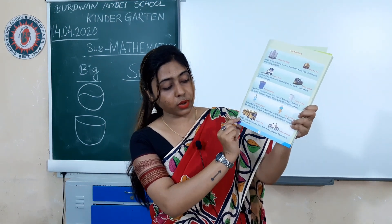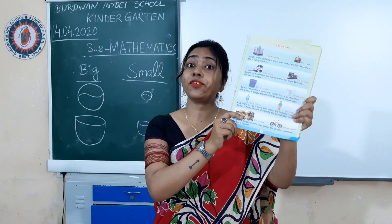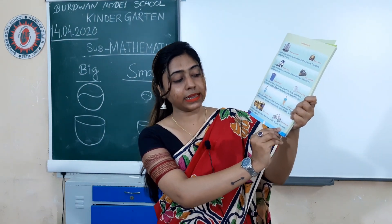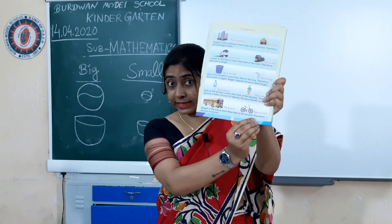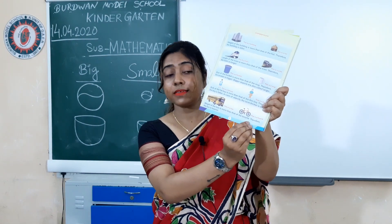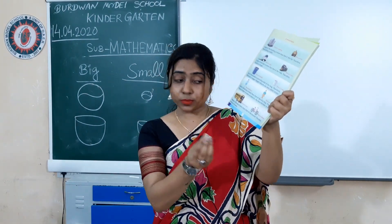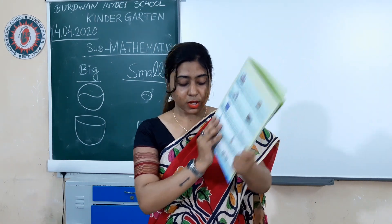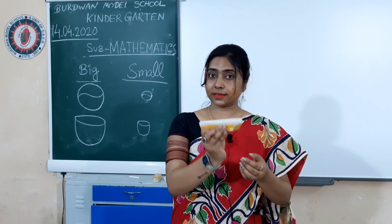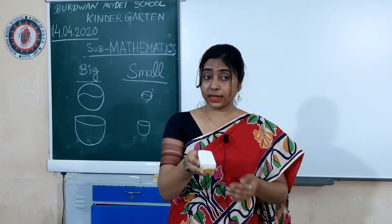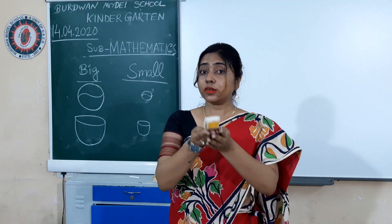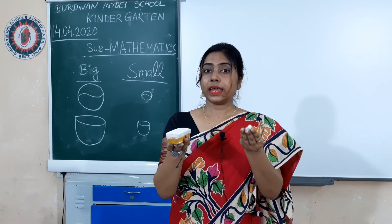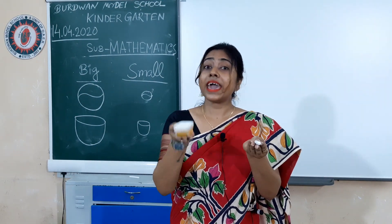This is also a bus. This is heavier, and this is a bicycle. The weight of the bus is too much compared to the bicycle. Like this — this is a duster and this is a chalk. The duster's weight is too much compared to the chalk. So the chalk is lighter and the duster is heavier.